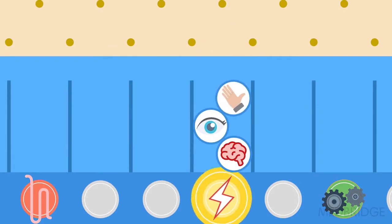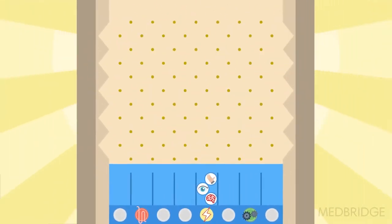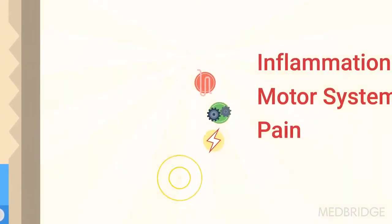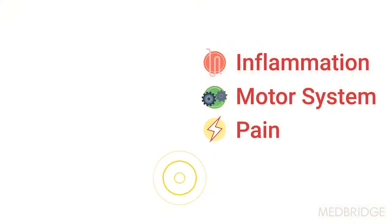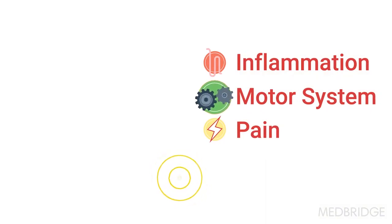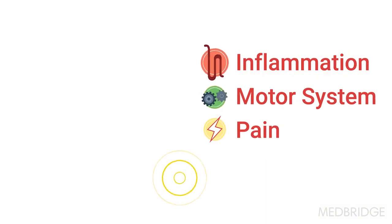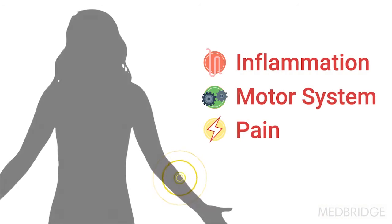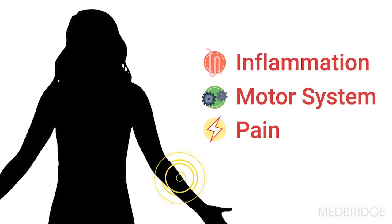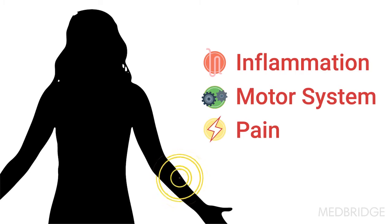There are other outputs that may occur other than pain — it could be motor system activity, or it could be immune or inflammatory activity. Pain is just one of these things. We also have to recognize that pain is intensely personal, subjective, and dependent on the context.